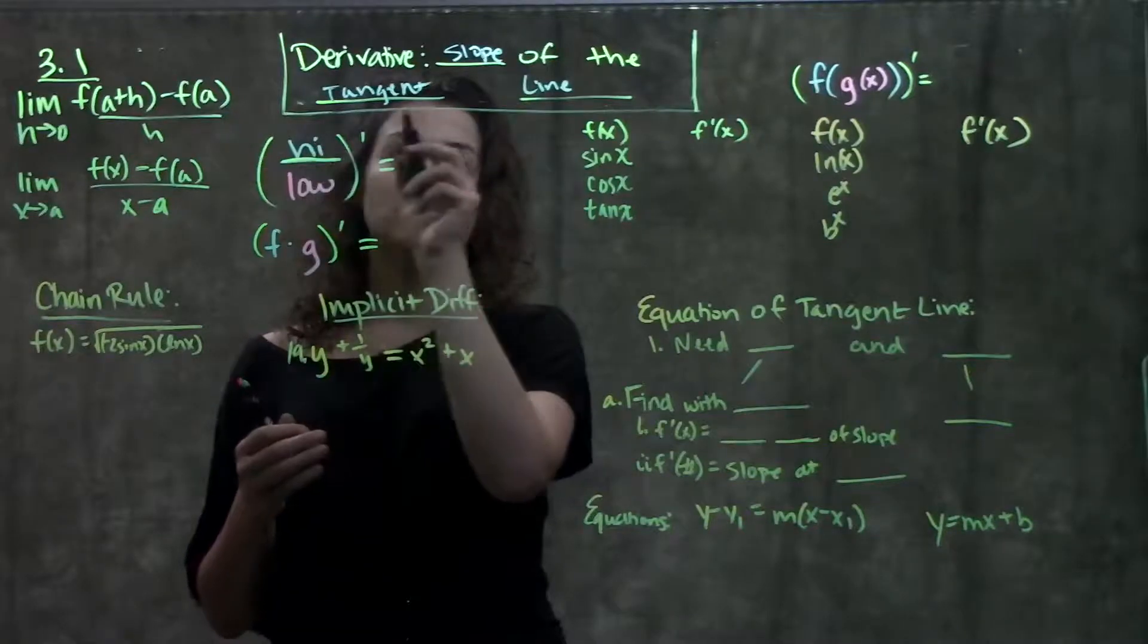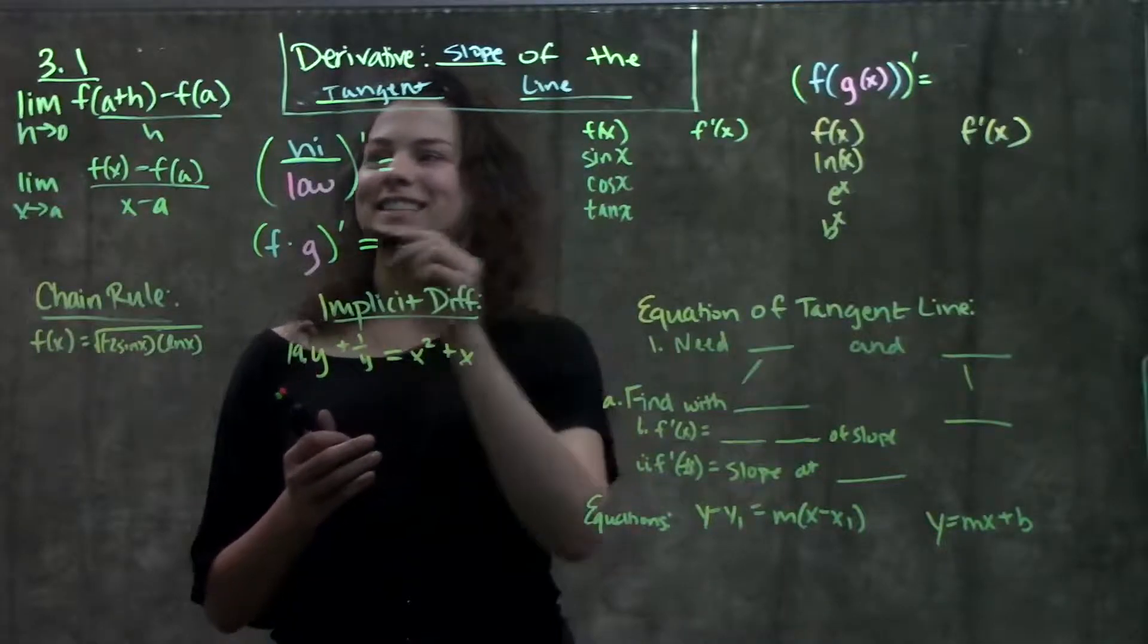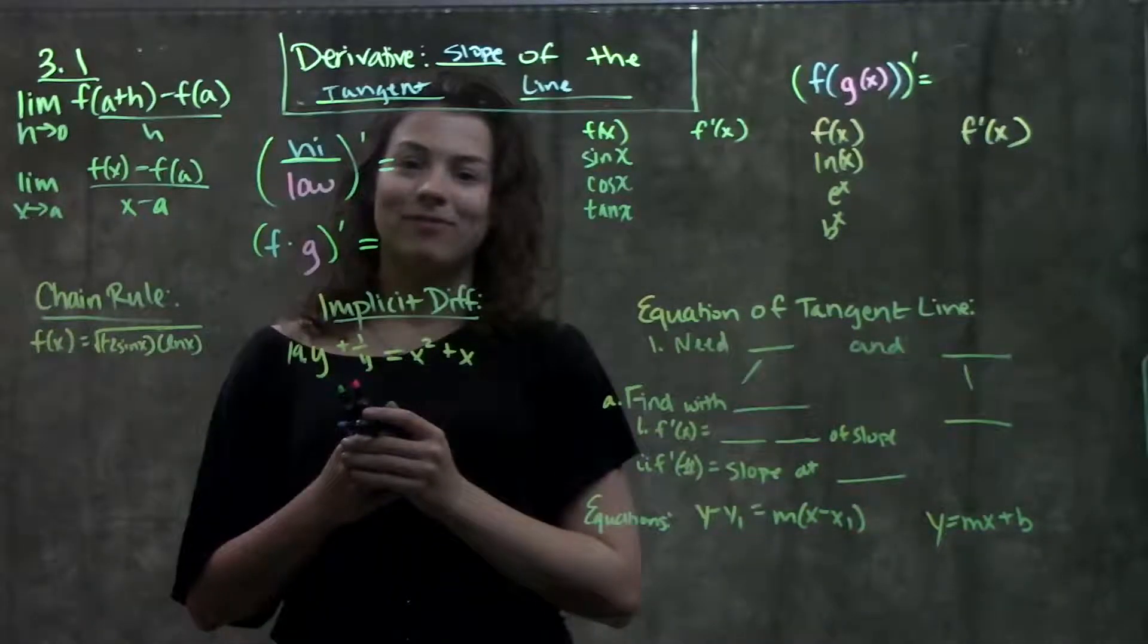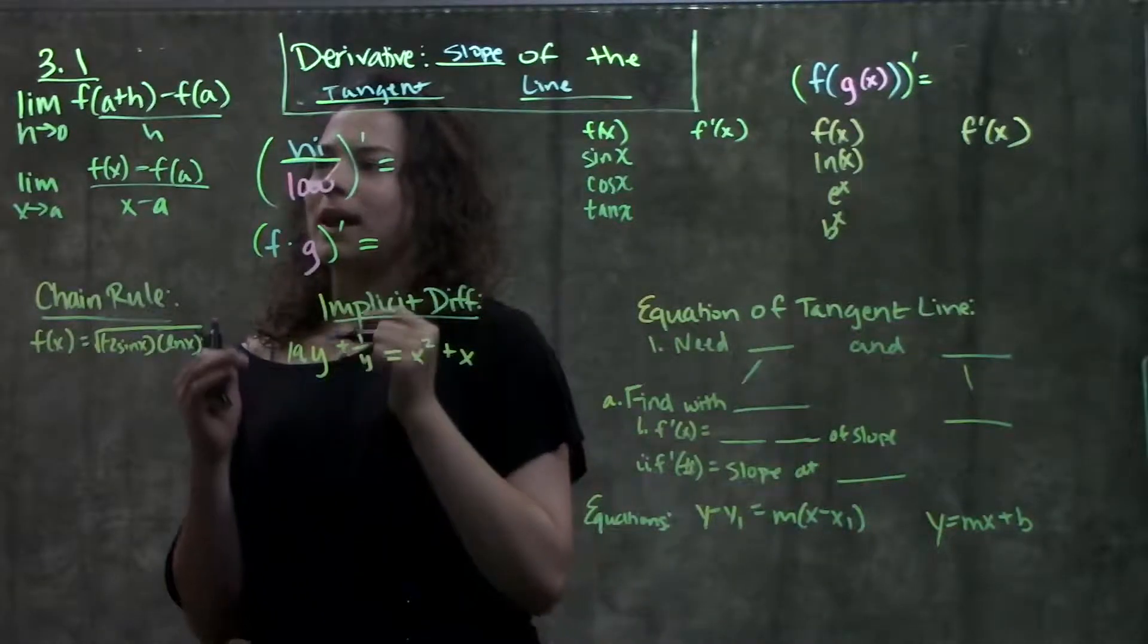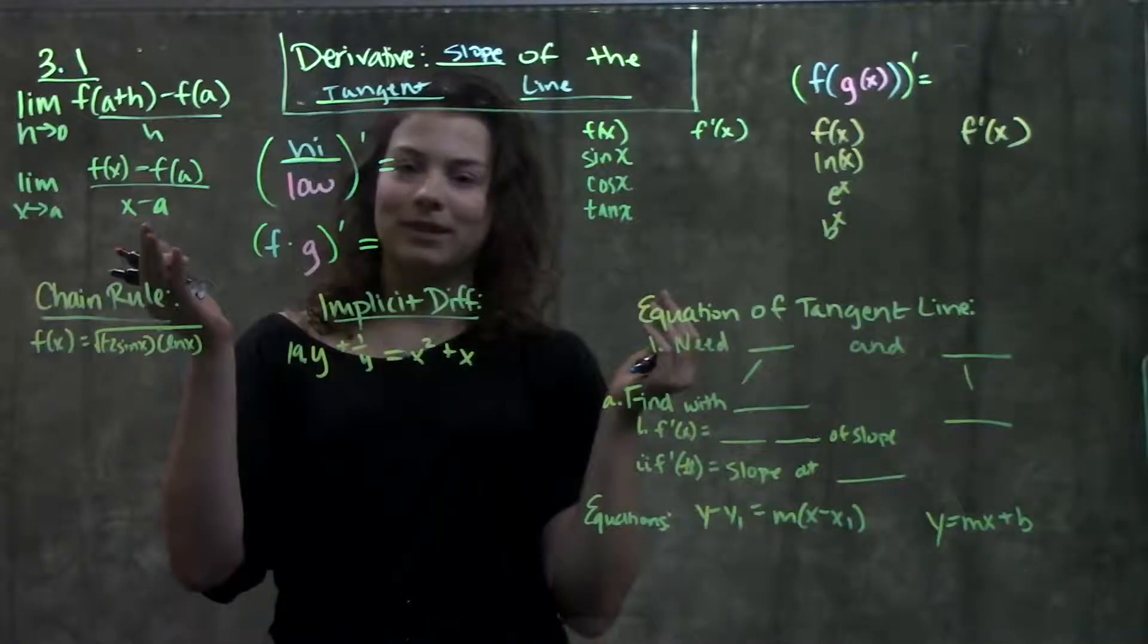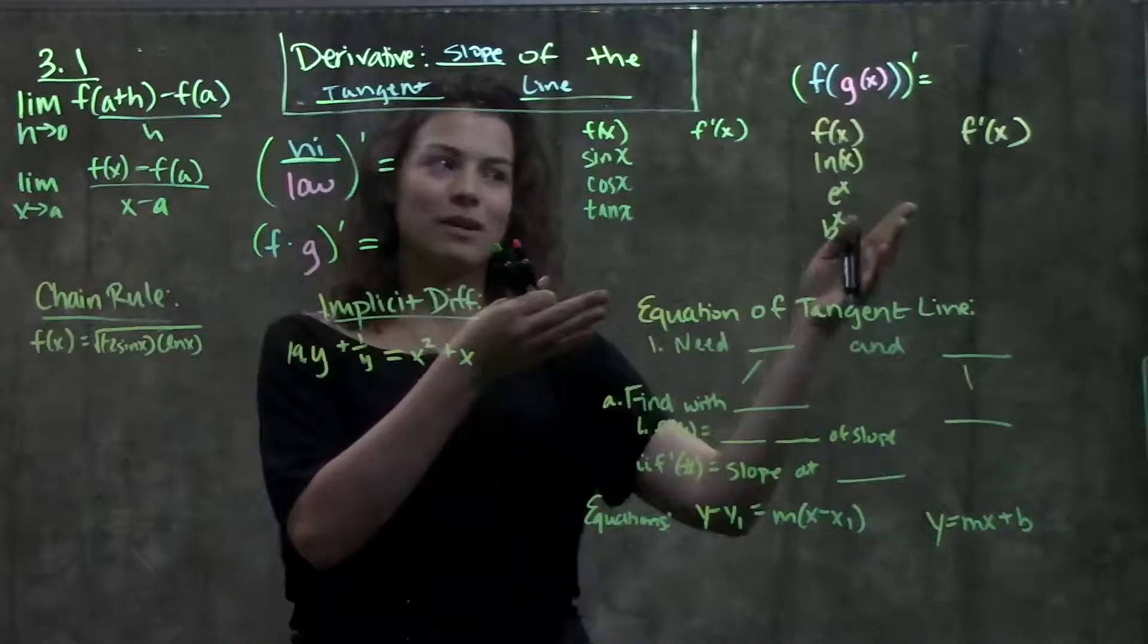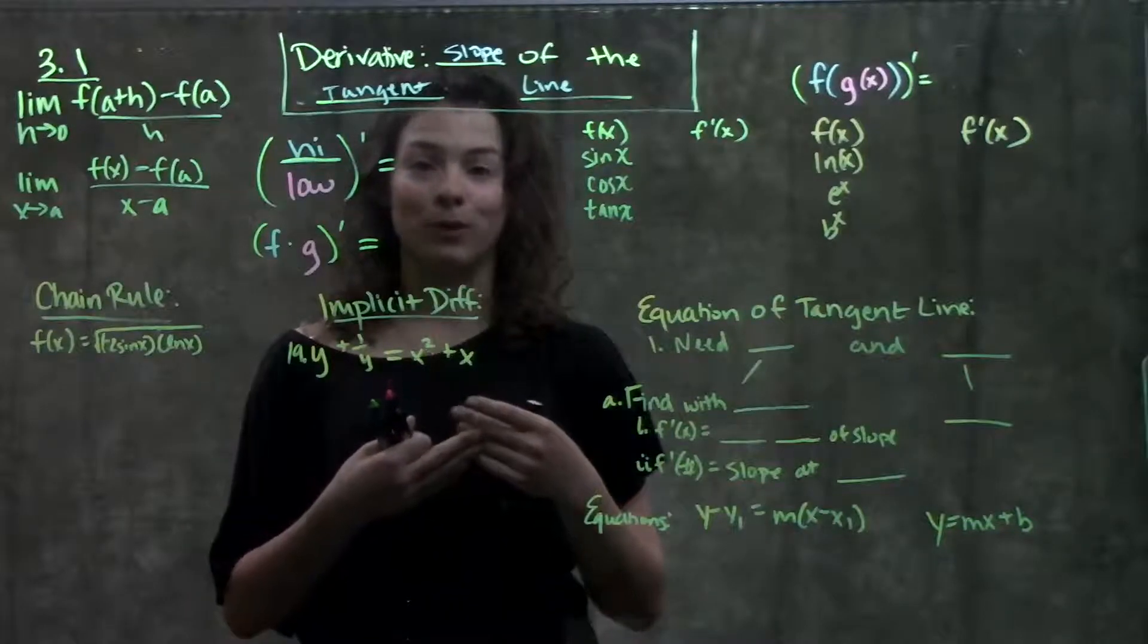Or, in other words, what the slope of the tangent line is, or what the instantaneous rate of change is at this point a. But after 3.1, it was great news. We were done with the limit definitions, and we learned the actual math way of how to take the derivative. So from here on out, we're going to go through the bunch of different rules that we learned.